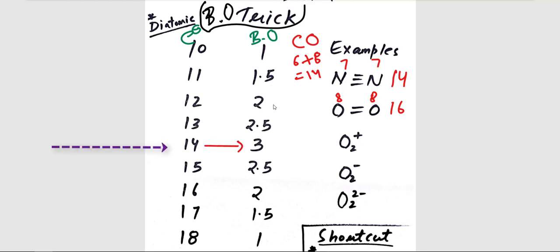So the trick is, you have to remember the bond order for those molecules which have 14 total electrons. For example, for N2 and CO, the bond order will be 3.